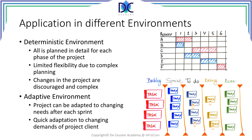In a deterministic environment, all is planned in detail for each phase of the project. We typically have a Gantt chart and we have limited flexibility, because the planning and re-planning of the project is very complex. Changes are discouraged because of the complexity, and when we have a change it may lead to many possible new errors in the planning of the project.